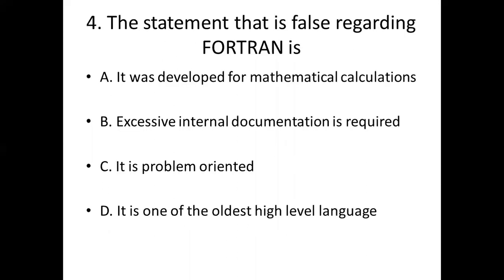Fourth bit: The statement that is false regarding Fortran. Option A: It was developed for mathematical calculations. Option B: Excessive internal documentation is required. Option C: It is problem oriented. Option D: It is one of the oldest high level languages.